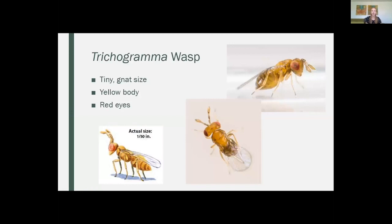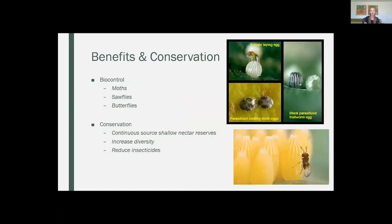So this is the Trichogramma wasp — this one's fairly talked up in the literature. It's a tiny little guy, really gnat-sized. You probably wouldn't notice it — it's got a yellow body, some red eyes, and it's pretty small. You probably wouldn't even know it's a wasp. But these guys are really big biocontrol for moths, sawflies, and butterflies. You can actually commercially purchase these guys for their benefits of biocontrol, which is pretty cool.